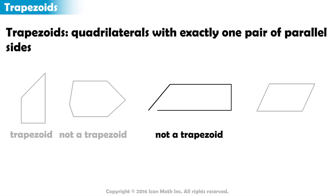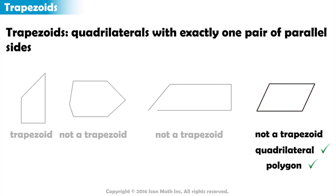We're left with this final shape. It looks like a trapezoid, but let's check. Well, it is made up of line segments joined together to make one closed path. That makes it a polygon. It has four sides, which means that it is a quadrilateral. But it has more than one pair of parallel sides. This means it is not a trapezoid.